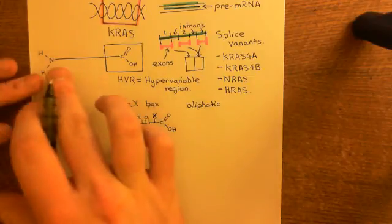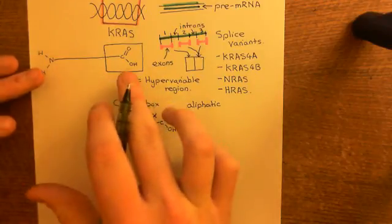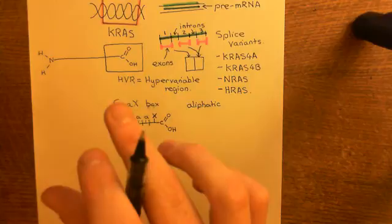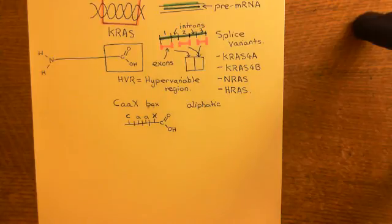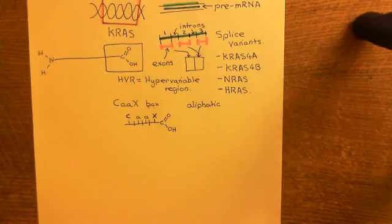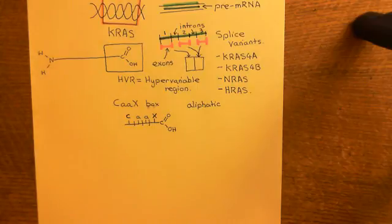Of course, the polypeptide isn't going to remain in this linear structure — it will fold into the tertiary structure of the RAS protein. We're now going to turn our attention to the synthesis and then the lipid modifications, but we'll turn our attention to that in the next video.